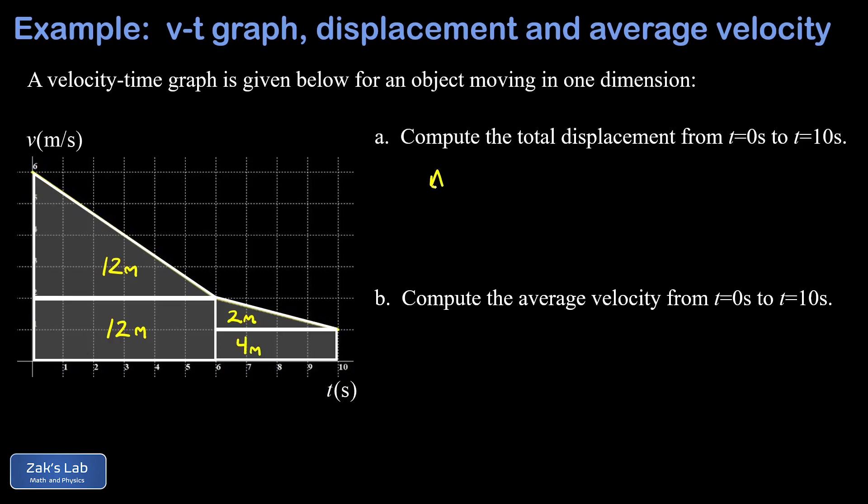Adding all this up, we get our total displacement. I have delta x is 12 plus 12, that's 24 plus an additional six, so we get 30 meters.